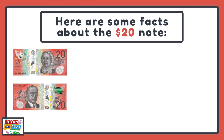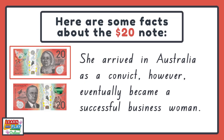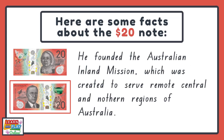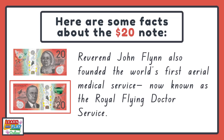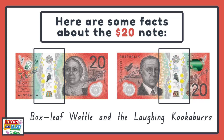Here are some facts about the $20 note. On one side, there is a portrait of one of Australia's most accomplished women, Mary Reibey. She arrived in Australia as a convict, however eventually became a successful businesswoman. On the other side of the $20 note is a portrait of Reverend John Flynn. He founded the Australian Inland Mission, which was created to serve remote central and northern regions of Australia. Reverend John Flynn also founded the world's first aerial medical service, now known as the Royal Flying Doctor Service. The box-leaf wattle and the laughing kookaburra are the native wattle and bird featured on this note.